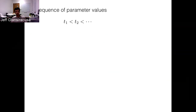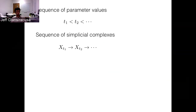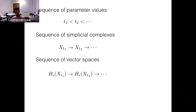If we take a sequence of real values for the parameter — the inflation of these balls — a sequence of parameter values gives us a sequence of simplicial complexes, and these maps will often be inclusions. We can then apply the functor of homology with field coefficients to this sequence of simplicial complexes, and we get a sequence of vector spaces.